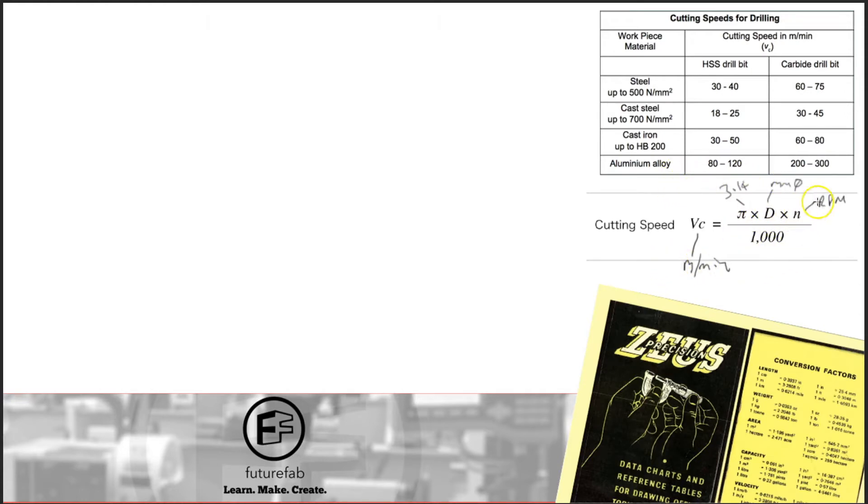Okay, so the way that the formula is presented here is in a bit of a strange format. It allows you to work out the cutting speed. Now, what is more useful is to work out this value N. Nine times out of 10, you're actually going to want to know what value you want to put your machine in. So let's just rearrange this. So we'll have VC times 1000 divided by Pi D is equal to N, which is the spindle speed.